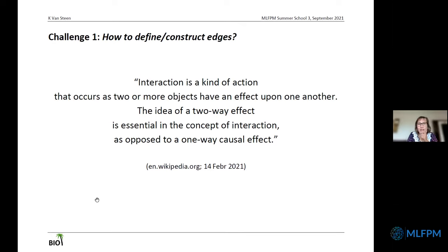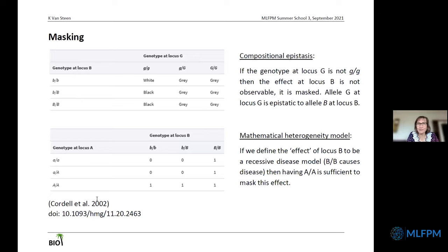The Wikipedia definition of interaction is not really informative — it seems to be a mixture of concepts. You can ask yourself: is interaction related to causality? Should it be? Going to the genetics literature, one of the definitions comes from Bateson, who introduced the term compositional epistasis in the early 1900s, describing a situation in which the effect of a genetic factor at one locus is masked by a variant at another locus. If you have at least one capital G allele at locus G, it doesn't matter what you have at B — the color is always grey. So here we say that G is epistatic to B, but it does not imply that B is epistatic to G. There is non-symmetry going on.